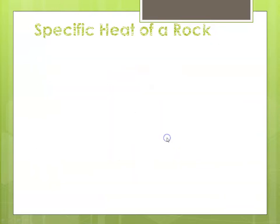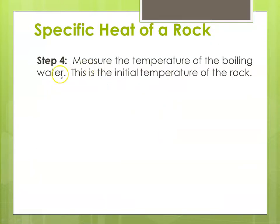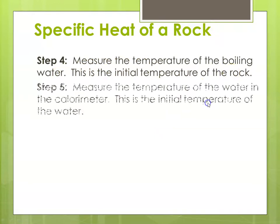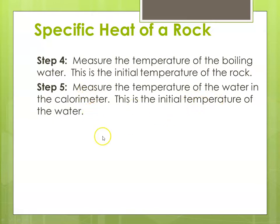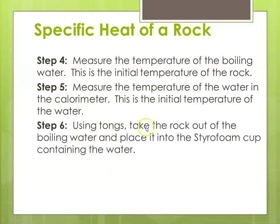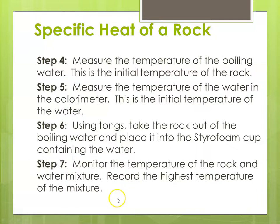Step four — measure the temperature of the boiling water, which will be the same temperature as the rock after 10 minutes. Step five — measure the temperature of the water in the calorimeter (the styrofoam cup); that gives us the initial temperature of the water. The rock starts out hot, the water starts out cool. Step six — using tongs, take the rock out of the boiling water and place it in the styrofoam cup containing the cool water. Step seven — monitor the temperature of the rock and water mixture and record the highest temperature reached.